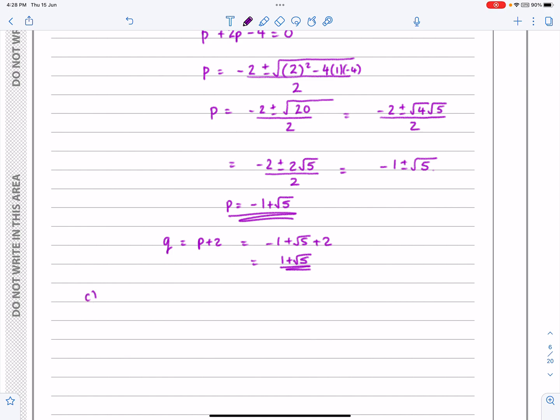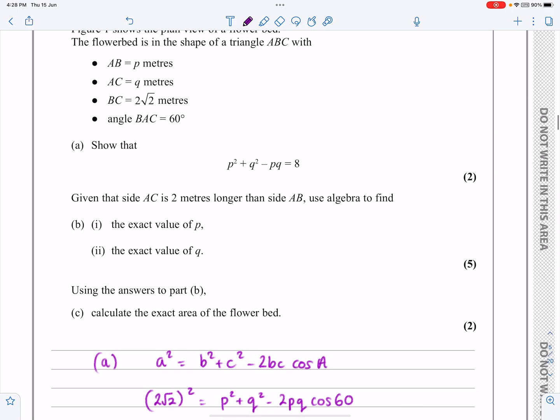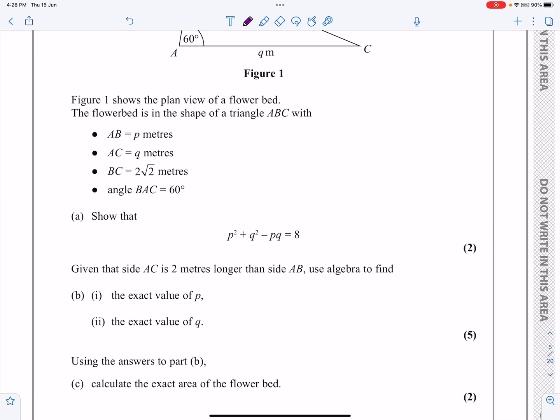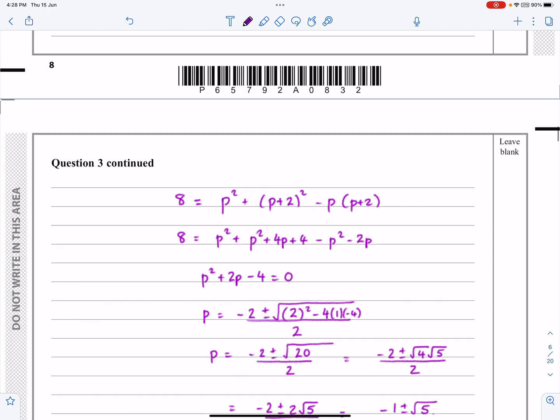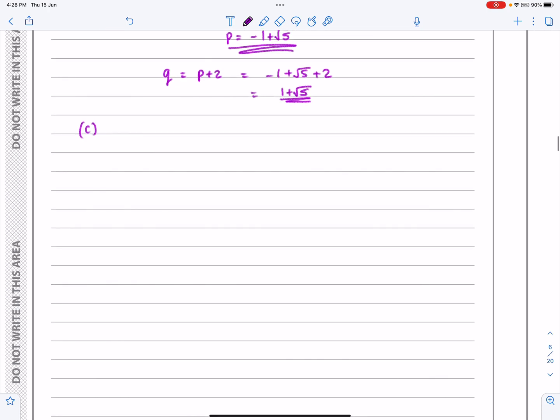And then part C. What did part C ask us for? Calculate the exact area of the flower bed. Well, if I've got this, this and this in the same way as I can use it for the cosine rule, I can also use it for the area of the triangle, half BC sine A. Let's just do that.